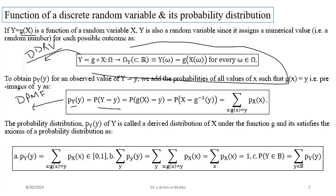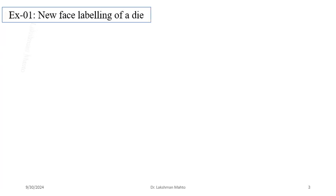This derived PMF must satisfy all three properties of being a probability mass function: values must lie between 0 and 1, and the total sum must equal 1. These properties were derived in a previous class.